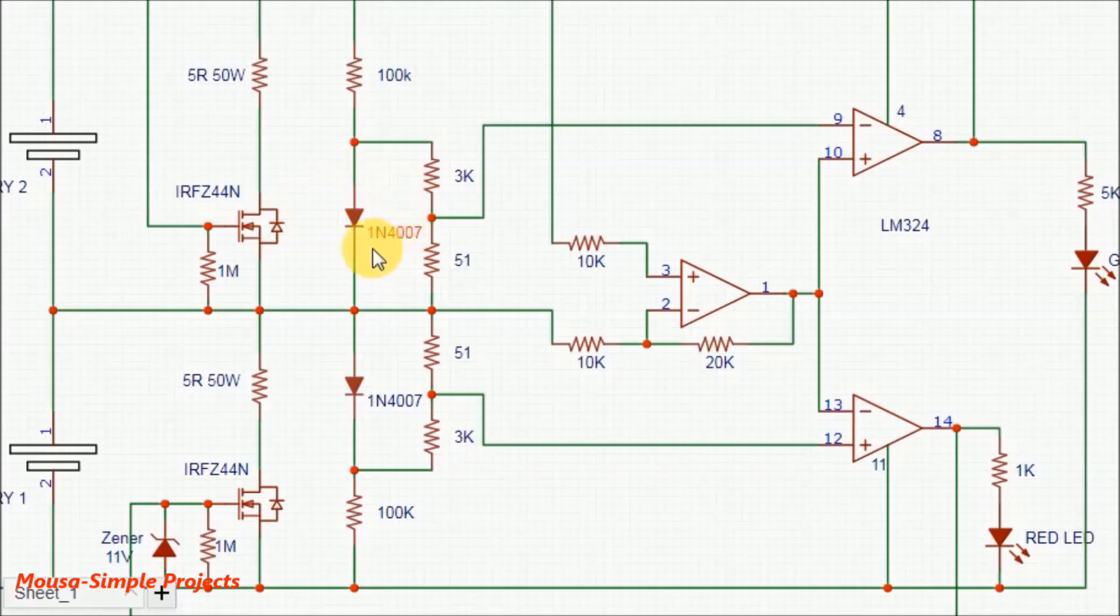I use the voltage drop across the diode as voltage reference. After using a resistor voltage divider, the voltage here will be plus 10 millivolts and here minus 10 millivolts. Then I connect these two voltages to the upper limit and lower limit of the window comparator.